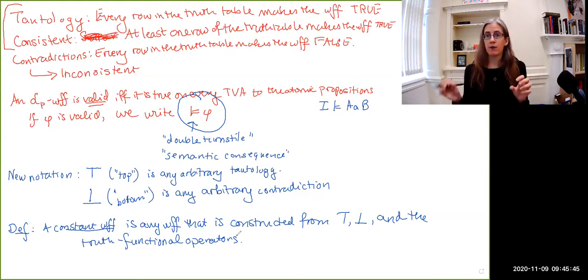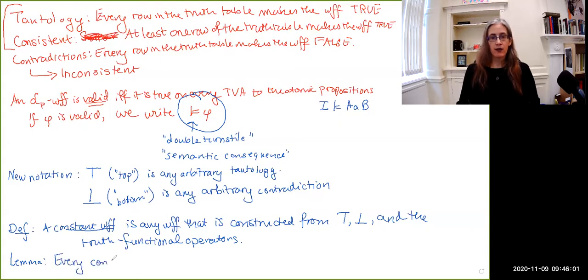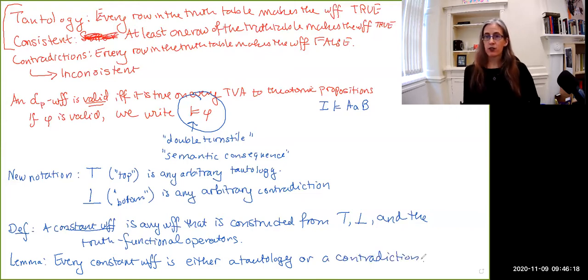If we have a formula that doesn't contain any explicit atoms, it just has top and bottom plus the propositional combinations, it is a constant formula. And I will note something, though I'm not going to give an explicit proof of it here. We will just say that every constant well-formed formula is itself going to be either a tautology or a contradiction. So if you start off with tautologies and contradictions and you combine them using the propositional operators, you will still only have tautologies or contradictions.